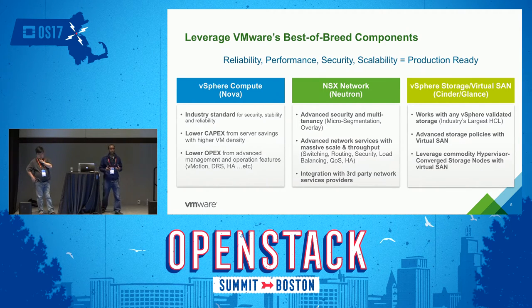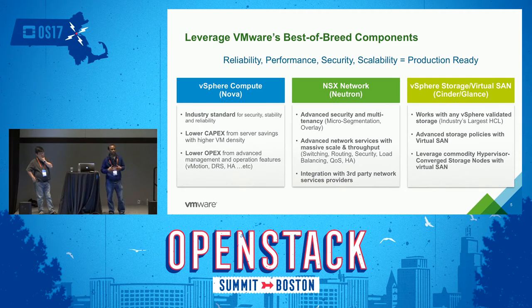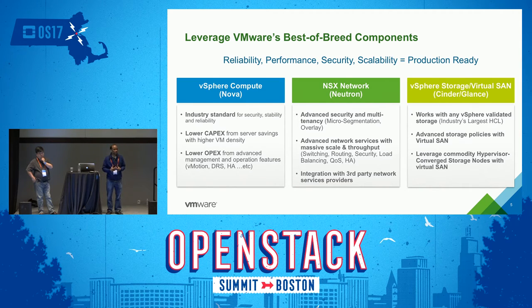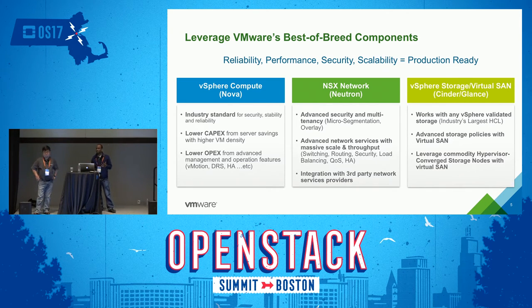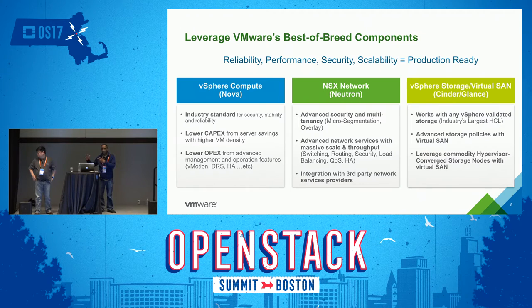If you build your IaaS platform on top of a stable, battle-hardened, tested infrastructure platform, the result is a very stable IaaS platform. Built on vSphere, you're able to leverage many platform benefits such as VMware HA, DRS, and vMotion — things that have been working in production environments for over a decade — readily usable in the OpenStack context. So you get the best of both worlds: open source community OpenStack plus a battle-tested infrastructure.